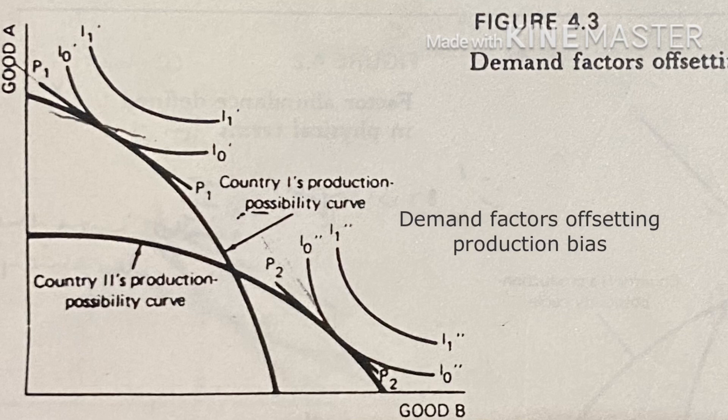From this it follows that when trade is opened up between the two countries, country one will be exporting good B and country two will be exporting good A. In other words, the country abundant in capital will export the labor-intensive good, and the country abundant in labor will export the capital-intensive good. To sum up: factor abundance can be defined in two ways in the Heckscher-Ohlin trade model. The two alternative definitions are not equivalent — only according to the factor price definition does it follow that the country abundant in capital exports the capital-intensive good. This is all about the H-O model.